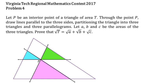In this video, we will solve problem number 4 from the Virginia Tech Regional Mathematics Contest 2017. Let P be an interior point of a triangle of area T. Through the point P, draw lines parallel to the three sides, partitioning the triangle into three triangles and three parallelograms. Let A, B, and C be the areas of the three triangles. Prove that the square root of T equals the square root of A plus the square root of B plus the square root of C.